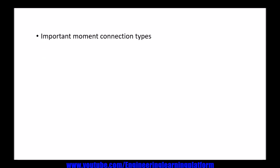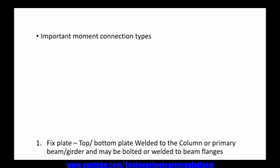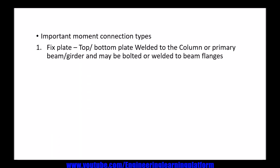Important moment connection types: the first is the fixed plate — a top-bottom plate welded to the column or primary beam girder, and may be bolted or welded to the beam flanges to transfer the moment from the connecting member to the column or its flange.